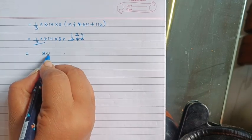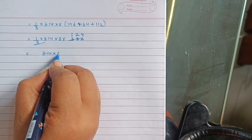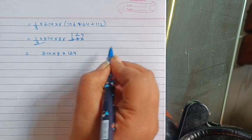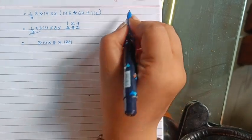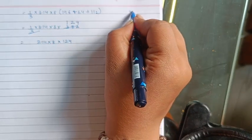3.14 × 124 = 389.36. Then 389.36 × 8 = 3114.88 cm³.